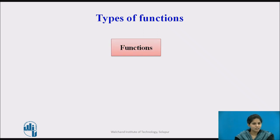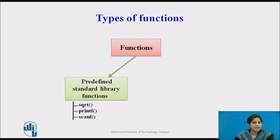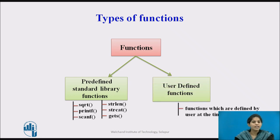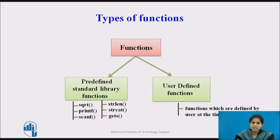Now we will see types of functions. There are two types: predefined standard library functions and user-defined functions. Predefined standard library functions are already defined in the C library for performing common operations. For example, sqrt is a mathematical library function used to find the square root of a number. printf and scanf are input-output library functions. Functions like strlen and strcat are for string manipulation and are defined in the string.h header file. You just need to include the appropriate header file to use these functions.